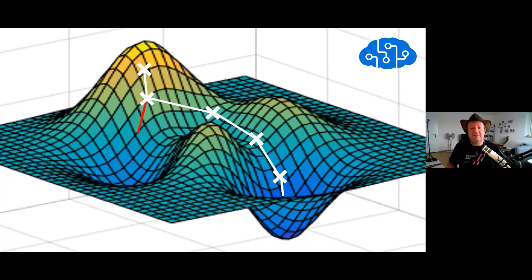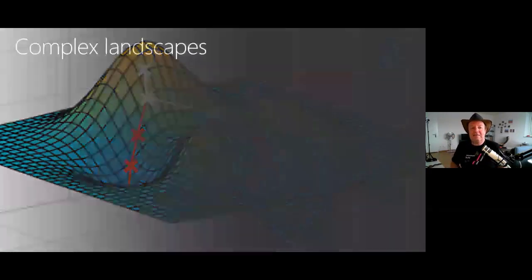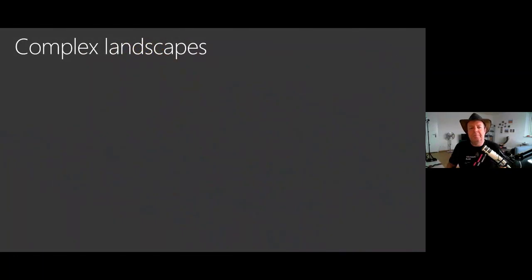But of course it doesn't always work like that. Sometimes you're going to take a wrong turn and then you're going to end up in what we call a local minimum. So you have sometimes some holes on the way like that. And of course, loss landscapes can be very, very complex.